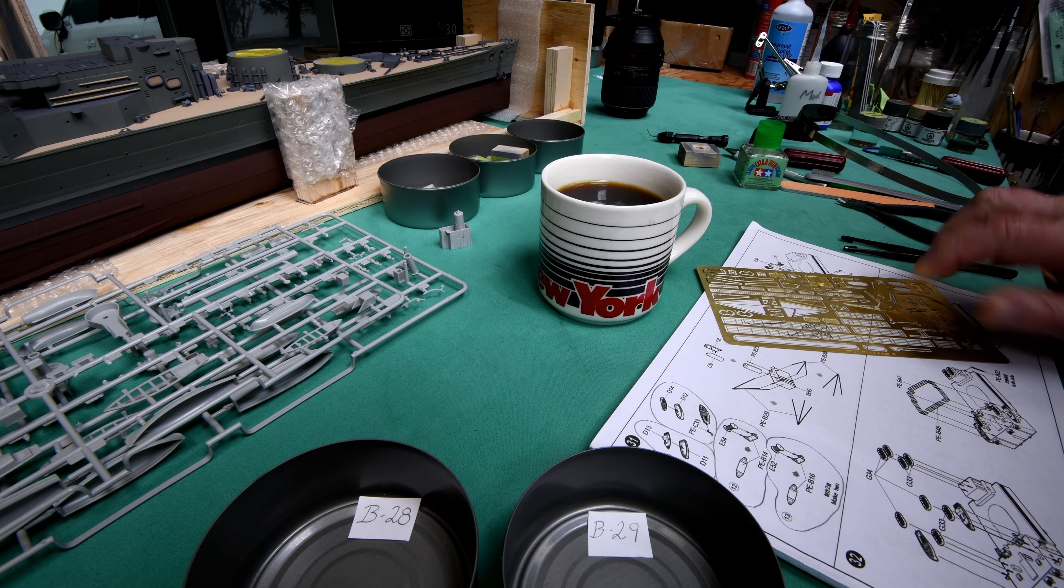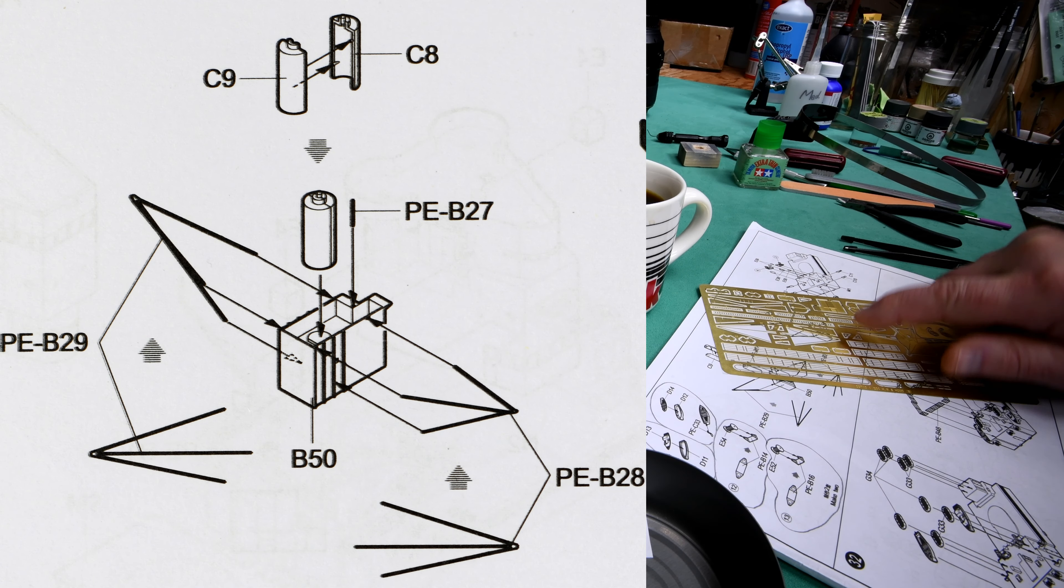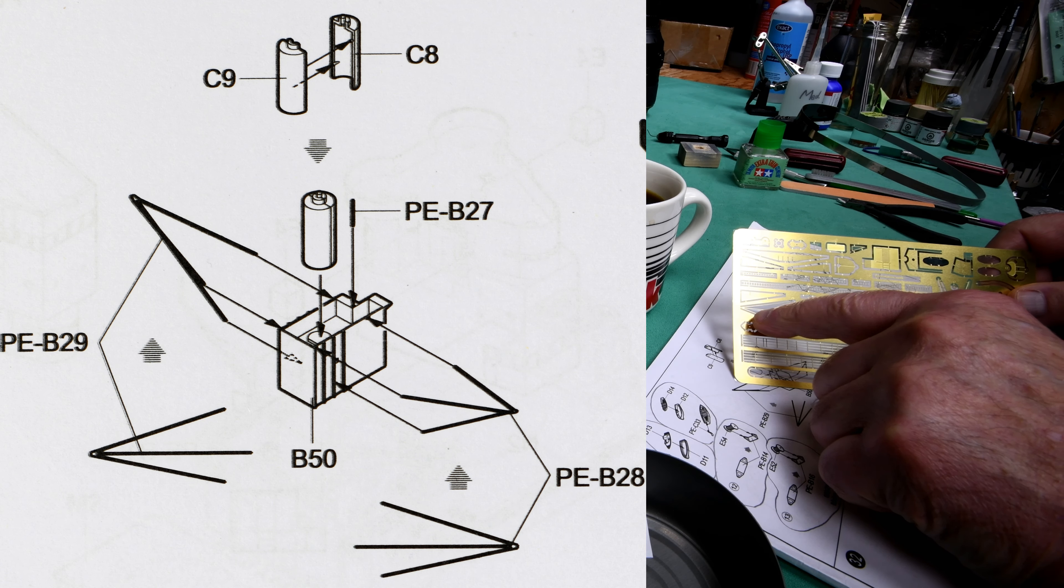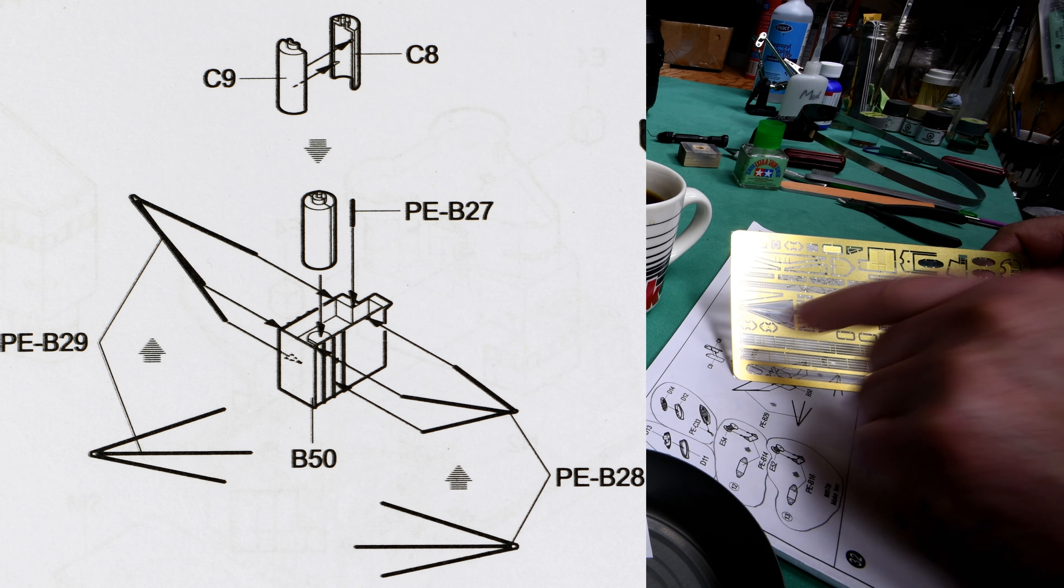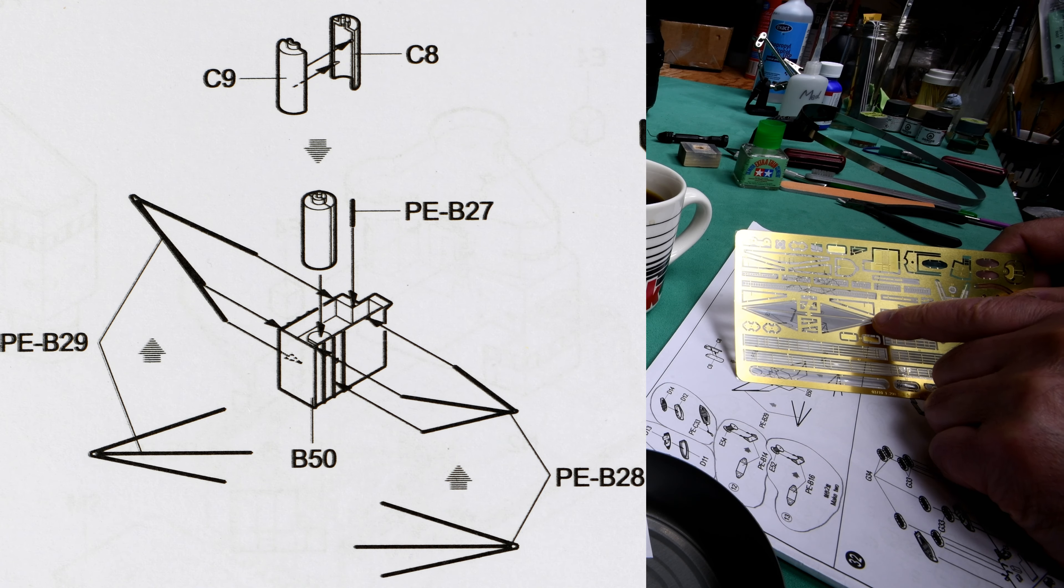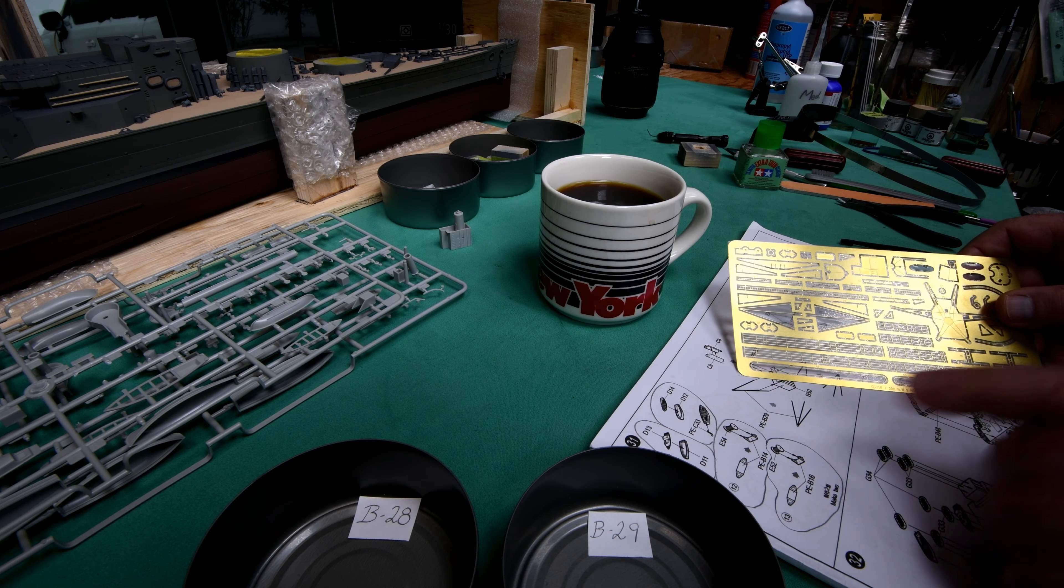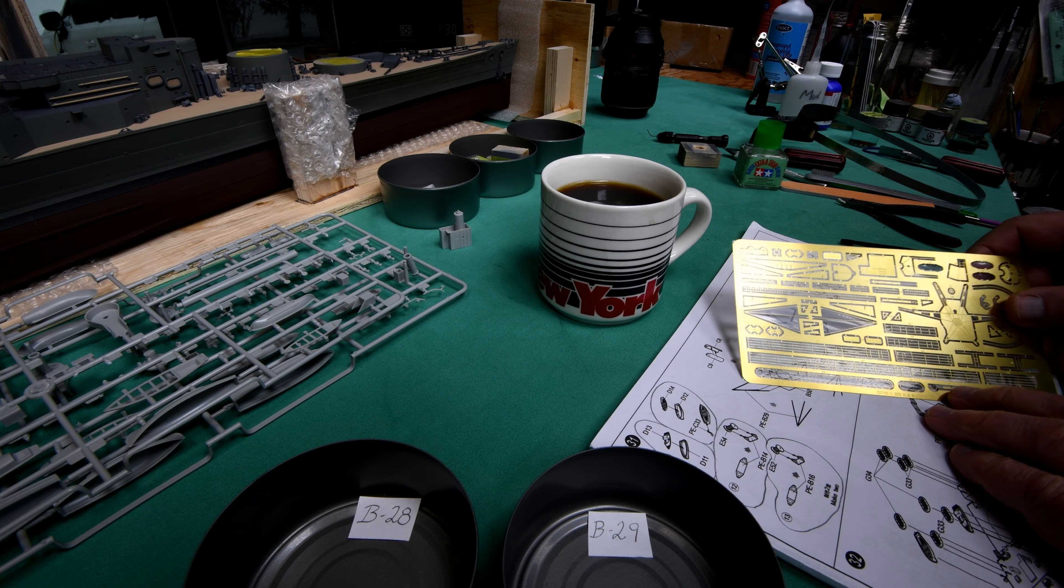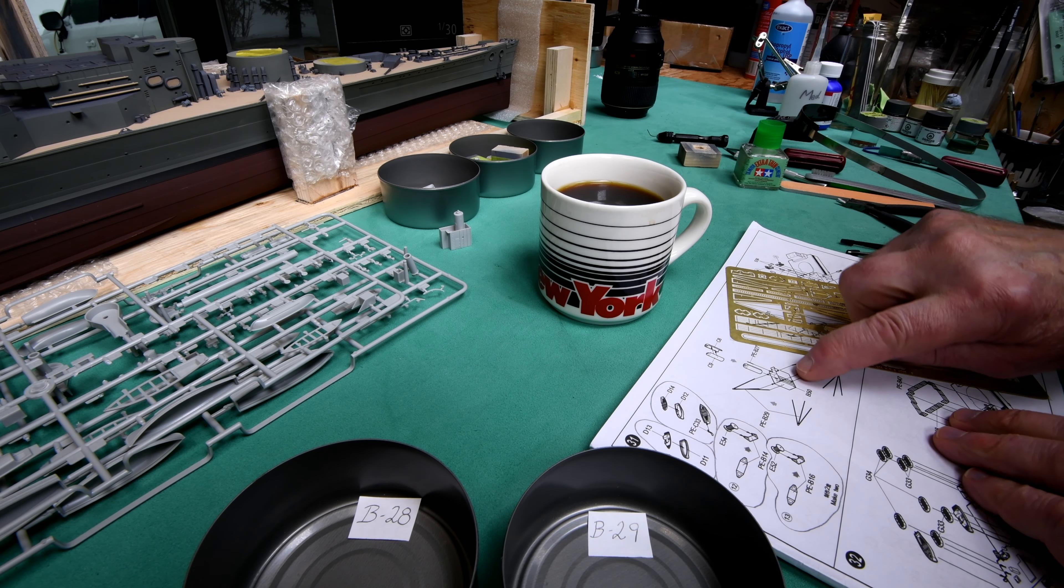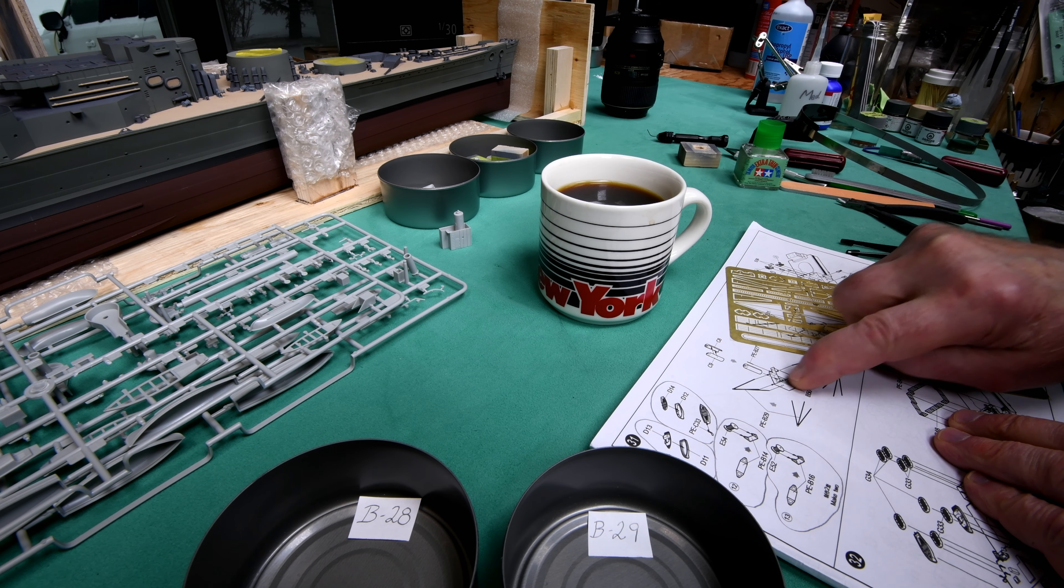Now for photo etch B28 and B29. At first I was thinking that it wouldn't matter which one went where because all I have to do is just flip it over. But then I realized that because of the way the crease is, to make it easier to bend, they are different. So I've made up a couple of different tins here to keep them separate.